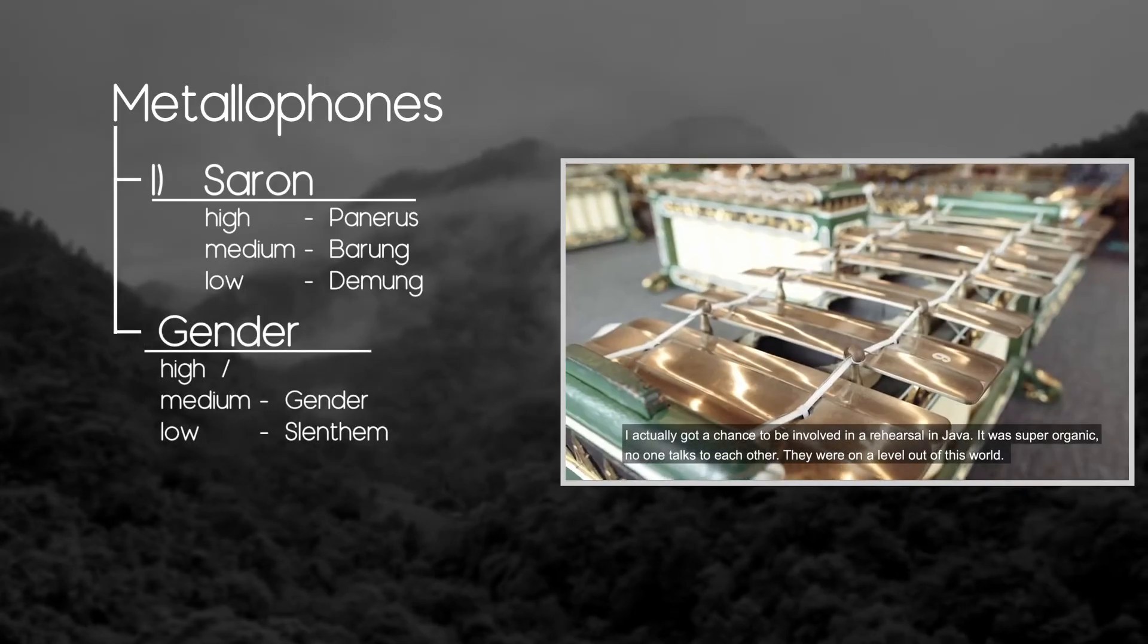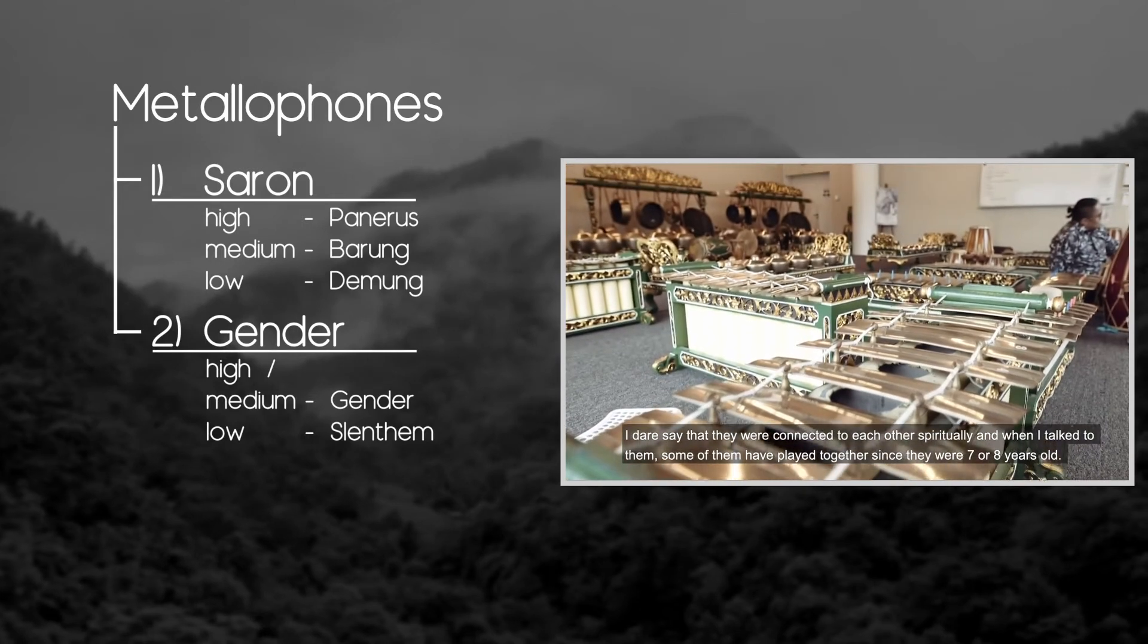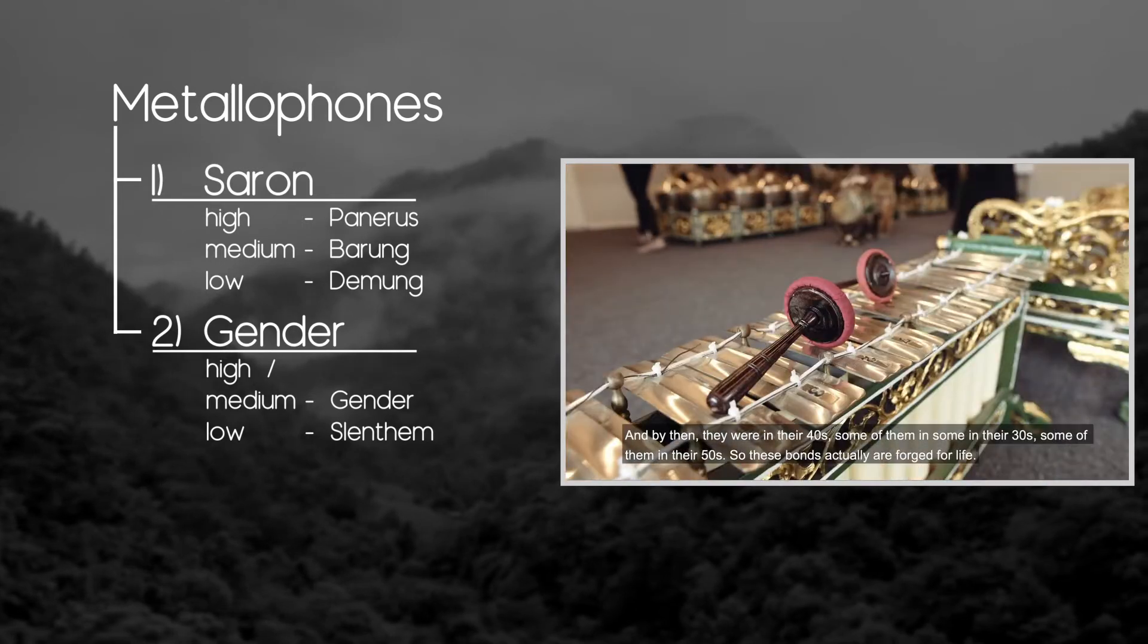Next, Metallophones is called Gender. It has a different shape of bronze bars than Saron, so it has a different timbre.